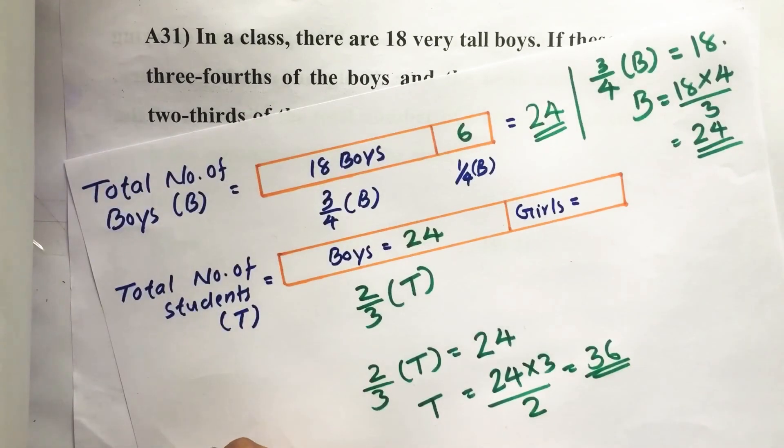Then total number of students equal to 36 minus total number of boys. We get total number of girls, that is 36 minus 24, which equals 12.